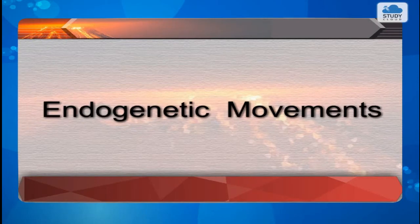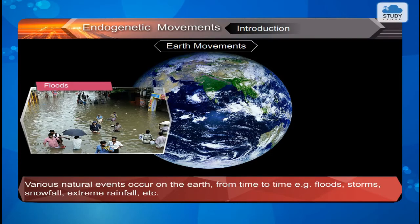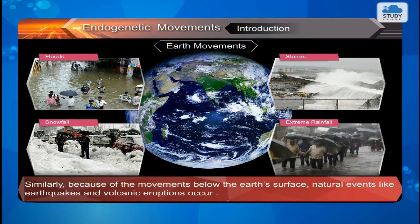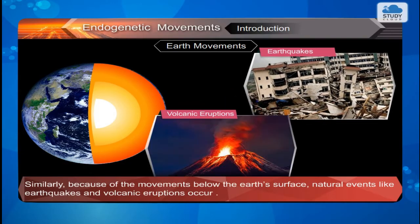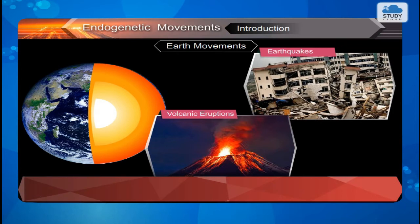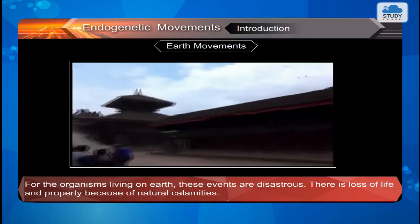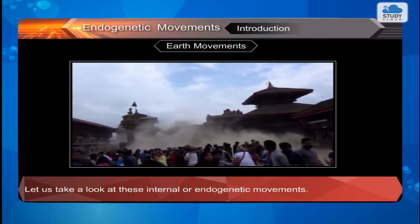Endogenetic movements — Introduction to Earth movements. Various natural events occur on the earth from time to time, e.g. floods, storms, snowfall, extreme rainfall, etc. Similarly, because of the movements below the earth's surface, natural events like earthquakes and volcanic eruptions occur. For the organisms living on earth, these events are disastrous. There is loss of life and property because of natural calamities. Let us take a look at these internal or endogenetic movements.